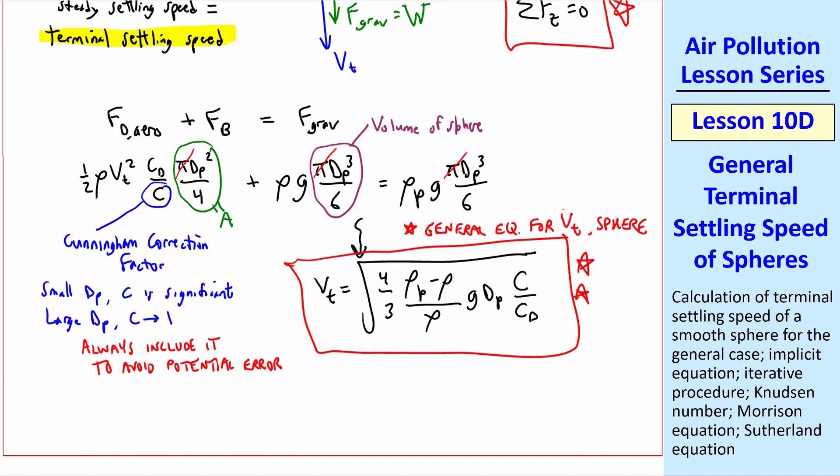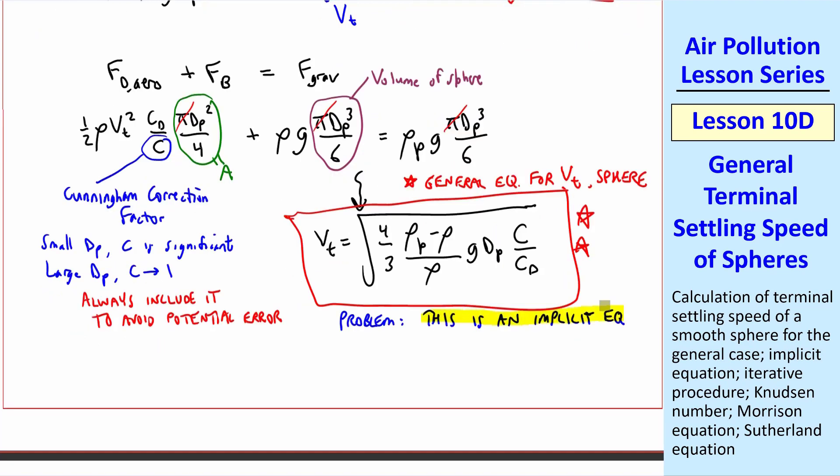The problem is that this is an implicit equation. Why? Well, vt is a function of Cd, as we see here. But Cd is a function of Reynolds number, and Reynolds number is itself a function of vt.